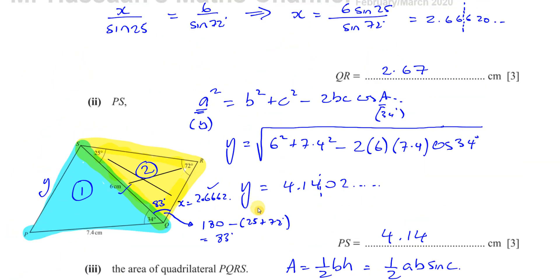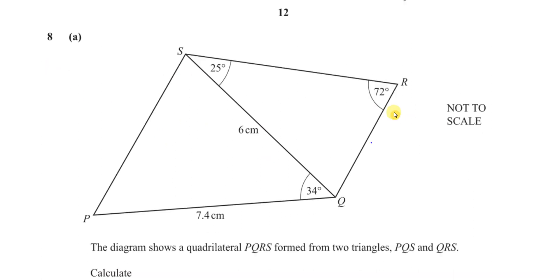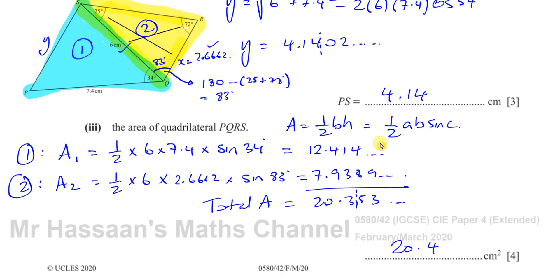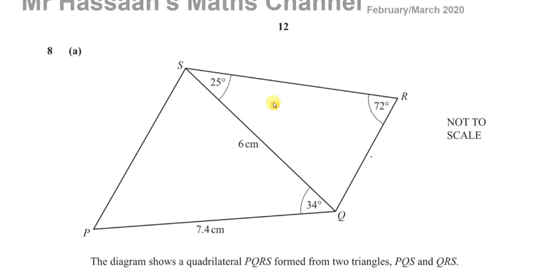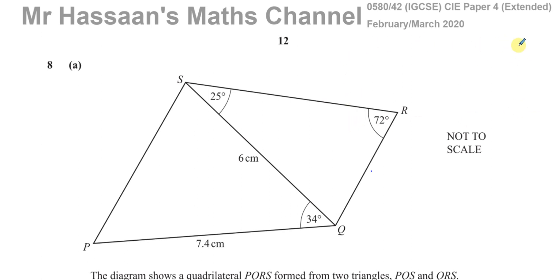That completes part A of question number 8. Part B is related to three-dimensional trigonometry, and I'm going to save it in a separate playlist dealing with 3D trigonometry. Other questions from this paper will be found in the playlist linked above, and you'll also find a playlist dealing with the trigonometry of non-right-angle triangles — sine rule, cosine rule, and so on. You can subscribe to my channel by clicking the link in the middle. Thank you for watching and see you soon.